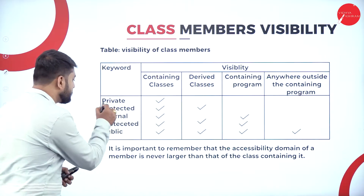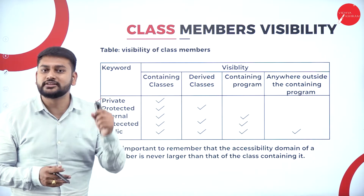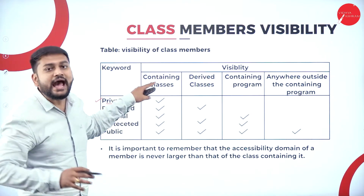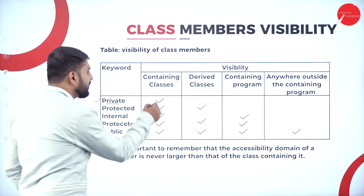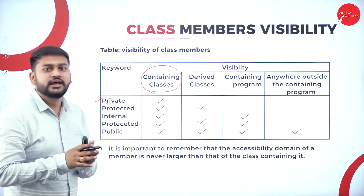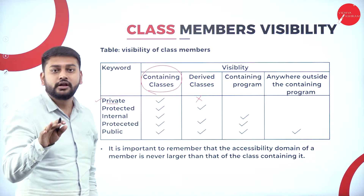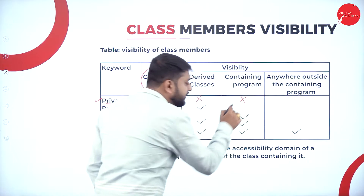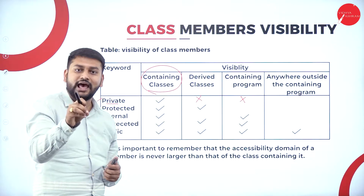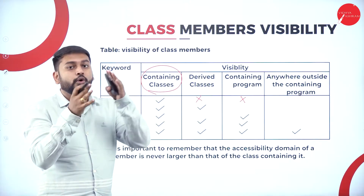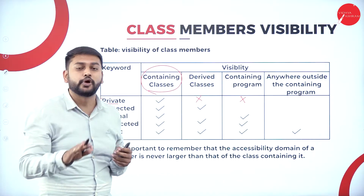I can define the visibility concept by five keywords. The first one is private. When I define a class under the scope called private, I will be accessing or the class is visible only in the class which contains it. In the same class I can see it, but when it comes to the derived class, I will not be able to see it. I will not be able to access it in the containing program or anywhere else. Only within the class can I access it; anywhere else I cannot.